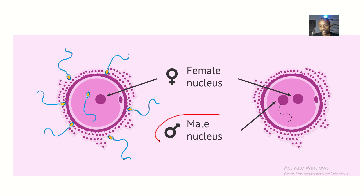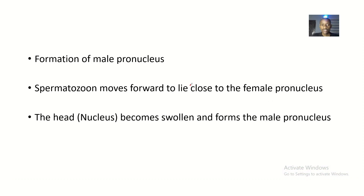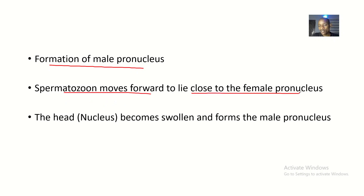The male pronucleus is basically like the nucleus of the sperm. So phase 4 of fertilization is the formation of male pronucleus, and the spermatozoon moves forward to lie close to the female pronucleus. So now the head — that's the nucleus — will become swollen and it forms the pronucleus.